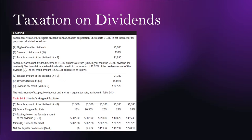Dividends are better than interest income since interest is taxed at the full federal marginal rate. But they are a bit worse than capital gains, since with capital gains only half of the gain is taxed at the federal marginal rate.